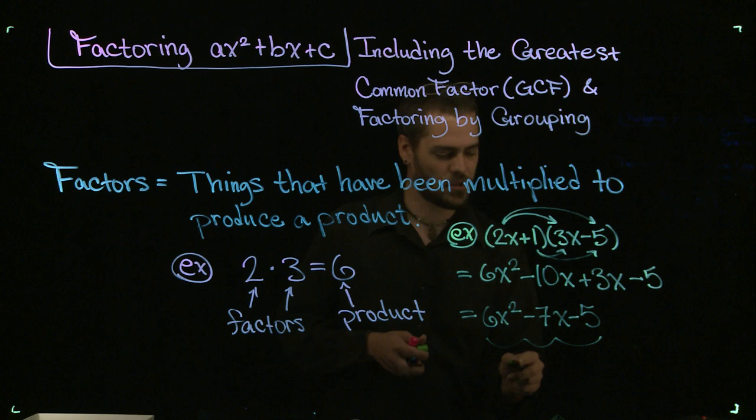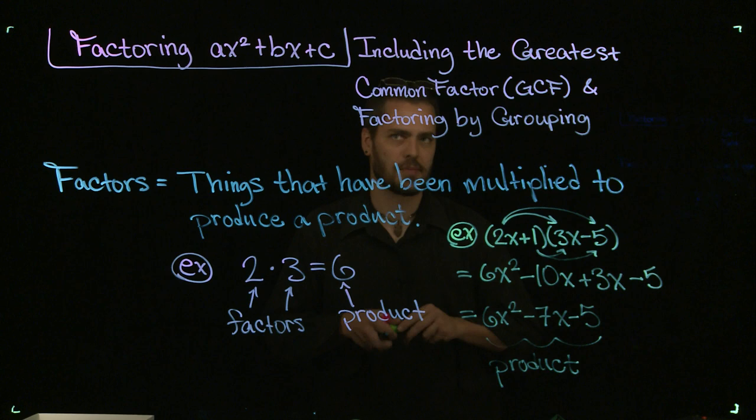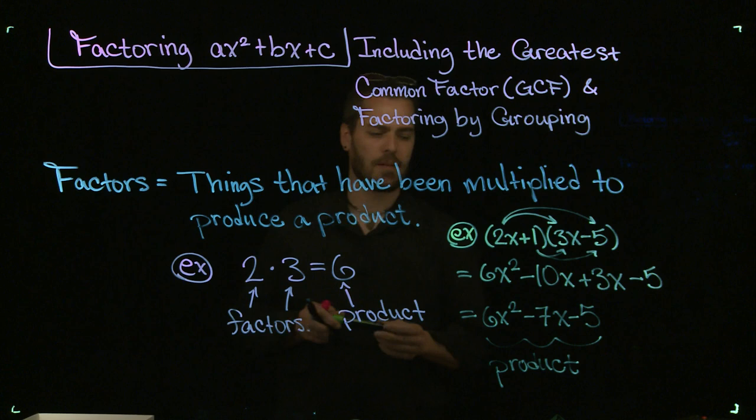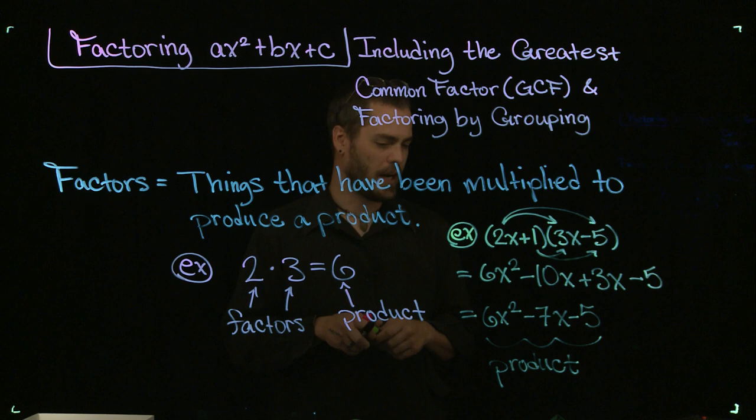And so this whole thing on the right, this trinomial, is the product. The two factors are the two binomials that we started with in the first place. So in this process of factoring ax² plus bx plus c, what we're going to end up doing is starting with trinomials, kind of like this one, 6x² minus 7x minus 5. And we're going to go the opposite direction of multiplying to try to somehow come up with the two factors that were multiplied to give us that in the first place.